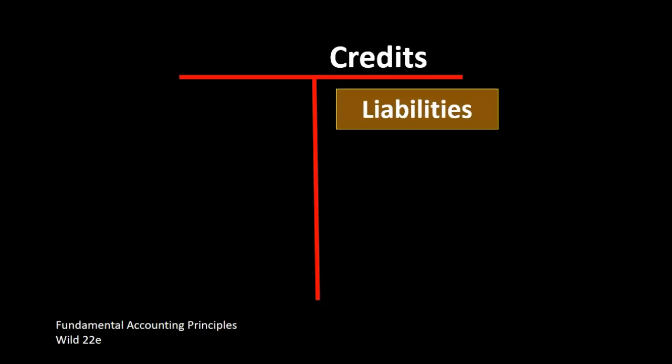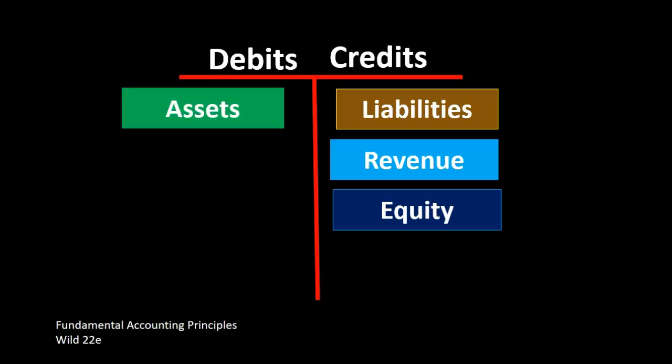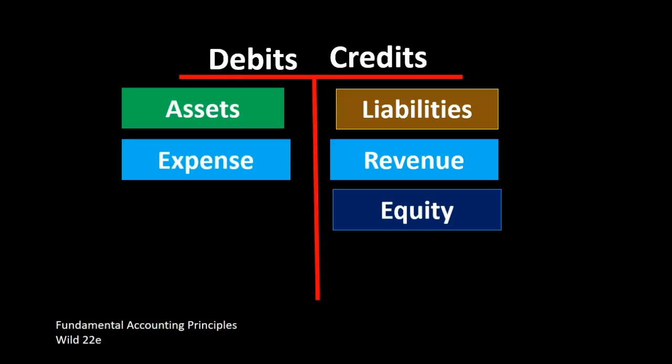And that means that liabilities, revenue, and equity are going to be credit type, normal credit type accounts. They're going to have credit balances in them. The other side being debits, that's the other side of our board. And the type of accounts that have debit balances will be assets and expense accounts.